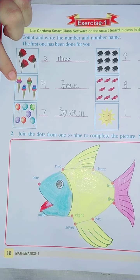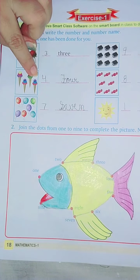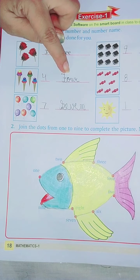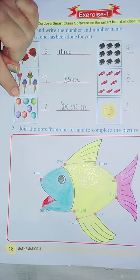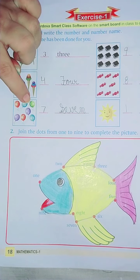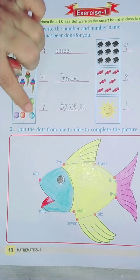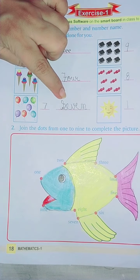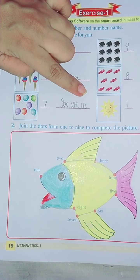Now count 1, 2, 3, 4. How many ice creams? 4. So write 4 and spelling of 4. Count the balloons, 1, 2, 3, 4, 5, 6, 7. Seven. Spelling of 7, S-E-V-E-N.